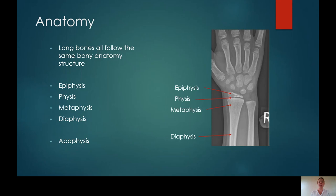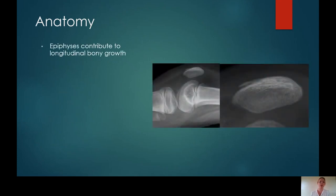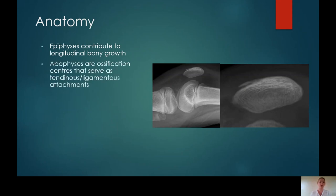The epiphysis is the little bony part at the very end of the bones and contributes to longitudinal bone growth. The physis is a cartilaginous structure in between the epiphysis and the metaphysis, and this is where the bone is proliferating from. The metaphysis refers to the area of the bone immediately adjacent to the physis, and the diaphysis is simply the shaft of the bone. Apophyses are similar to epiphyses, but serve as tendinous or ligamentous attachments.